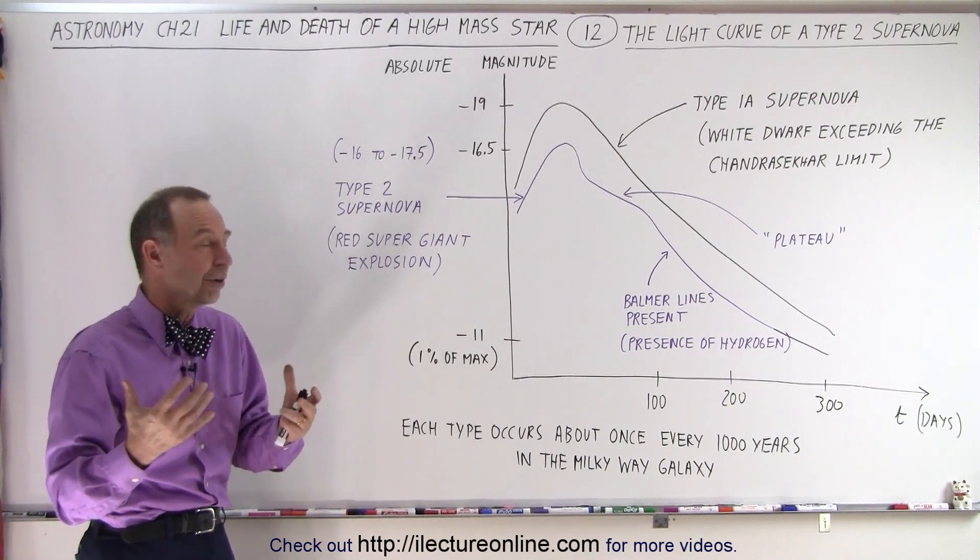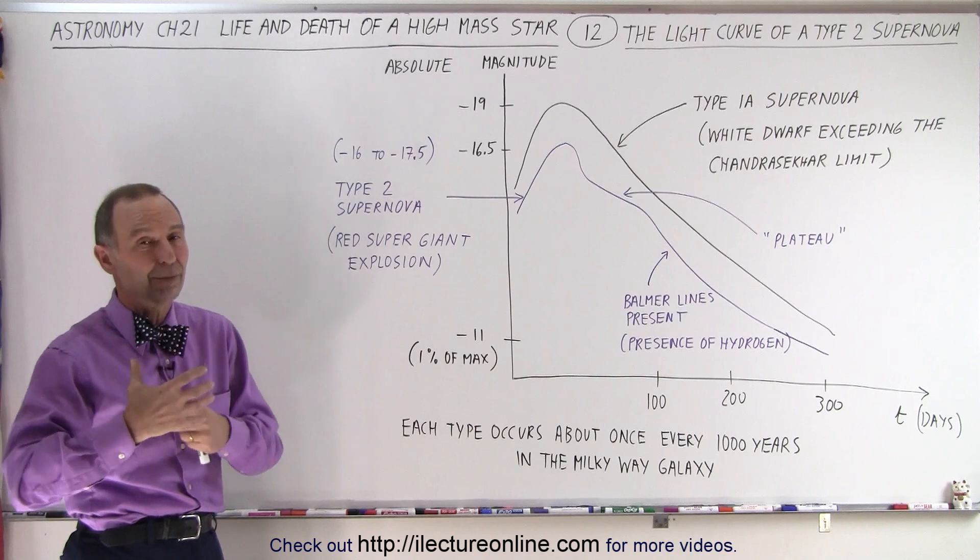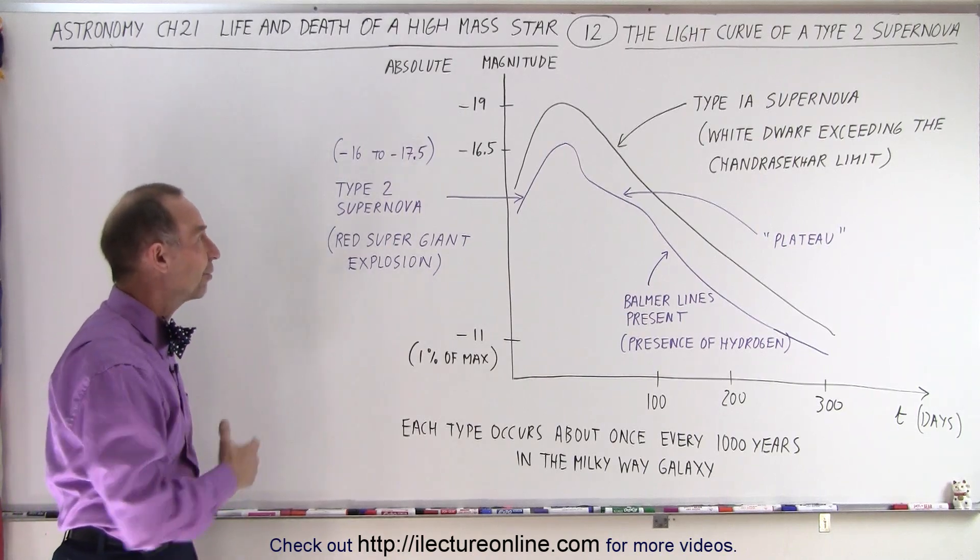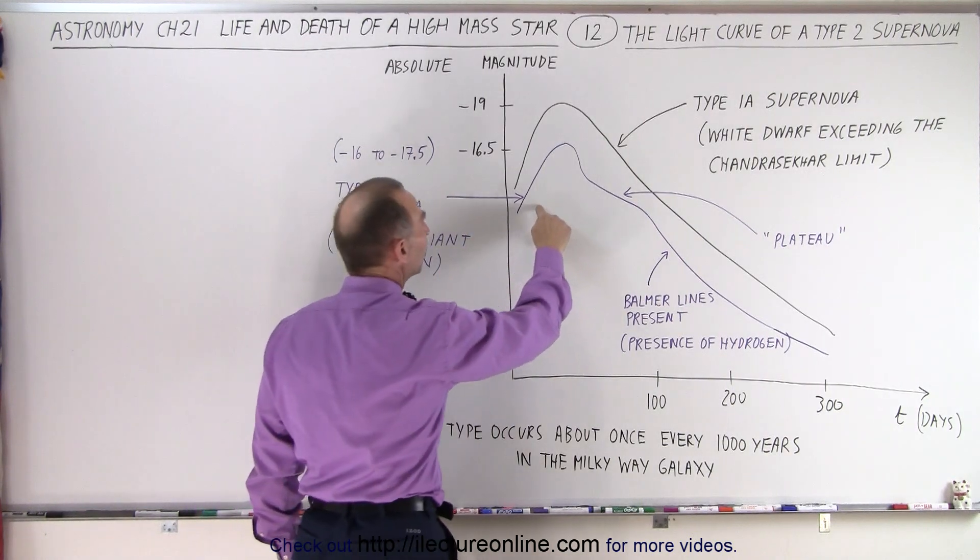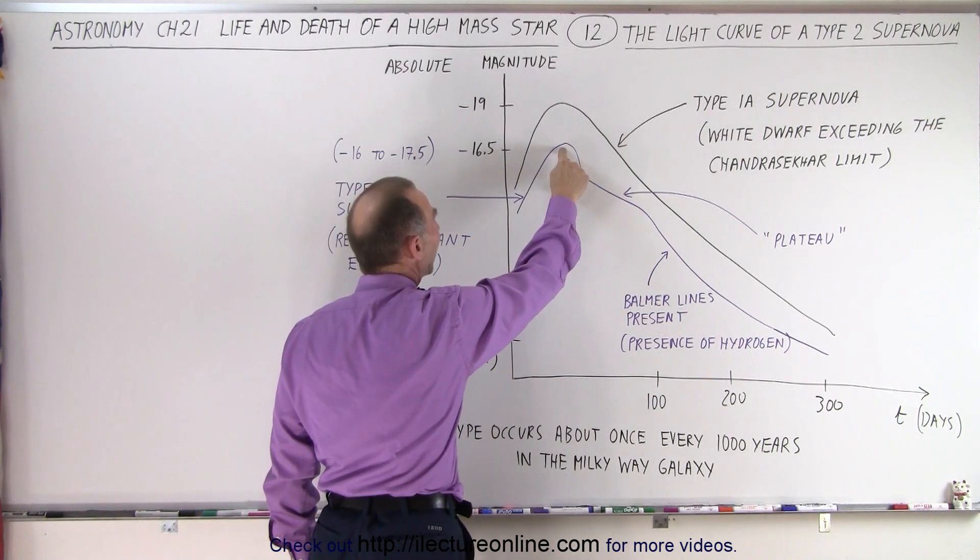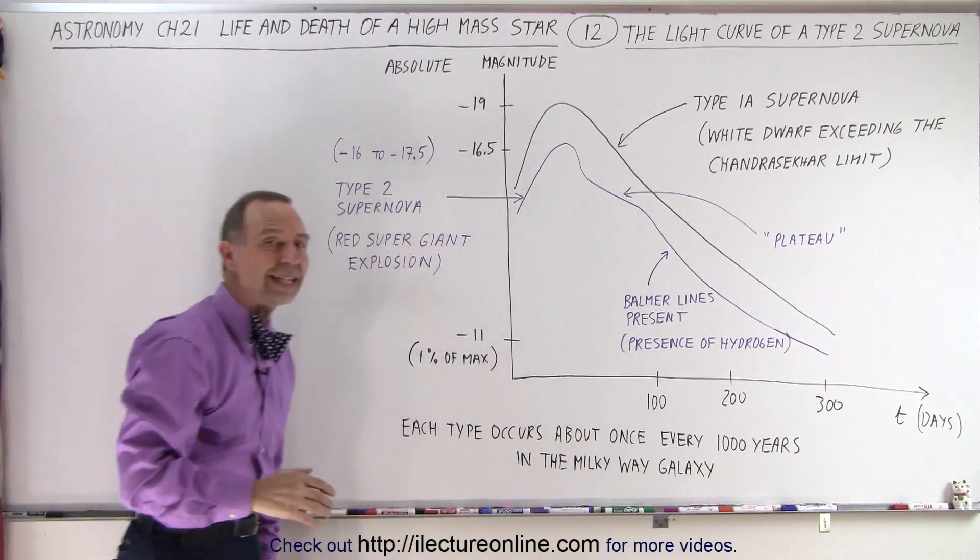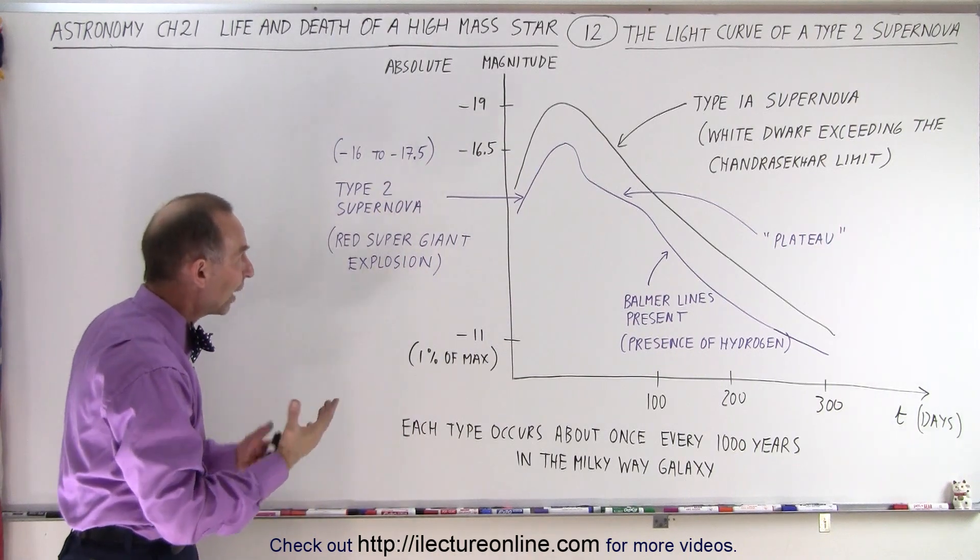But when it comes to be a supernova, it is many many times, many thousands of times, the brightness of the original red giant. In a Type 2 supernova, the brightness increases until it reaches about a minus 16.5 in the absolute brightness scale.